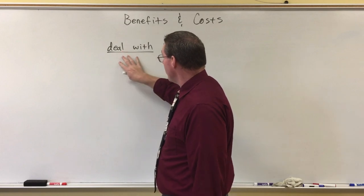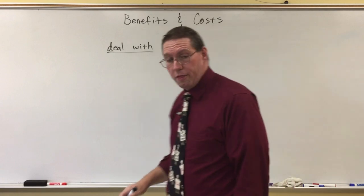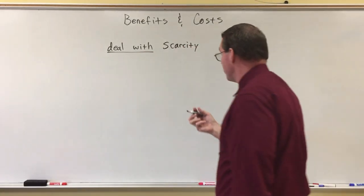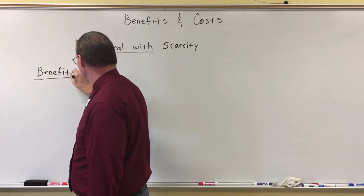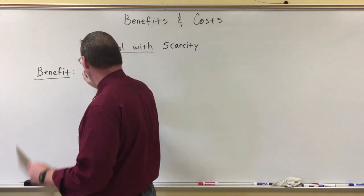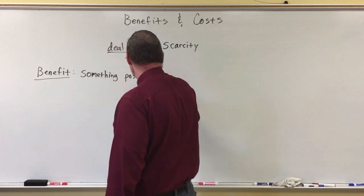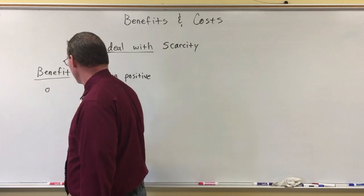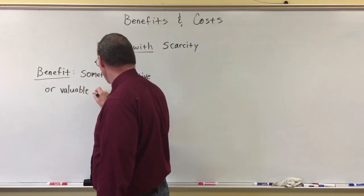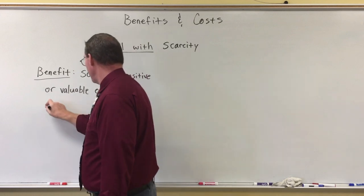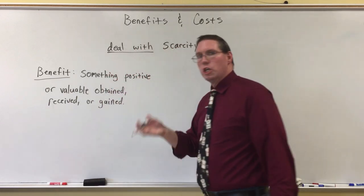So when somebody makes a decision, there are two elements to every decision: there are benefits of the decision and there are costs associated with the decision. I'm going to give you definitions of the words benefit and cost. A benefit is something positive or valuable — obtained, received, or gained. Basically, when you get something good, that's a benefit.